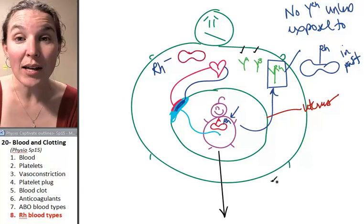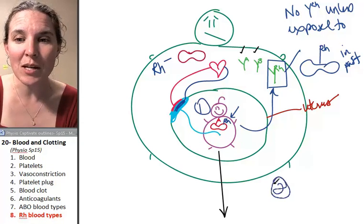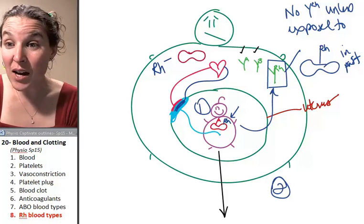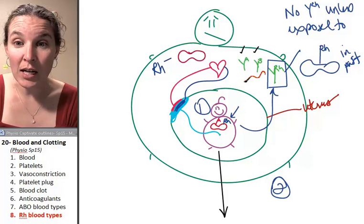She builds anti-RHs because that thing should never come back. But guess what? That's baby number one. What happens to baby number two? Baby number two? These antibodies, they're like on a mission from the universe.